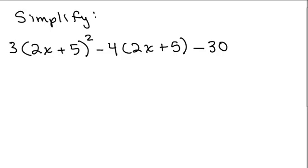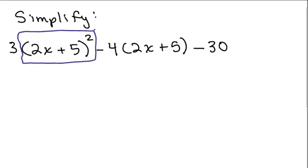Next you see if there's anything with exponents, and we do see we have this 2x plus 5 squared. So remember, we don't multiply 3 times the 2x plus 5 first — we have to do exponents, which means this part right here, 2x plus 5 squared.